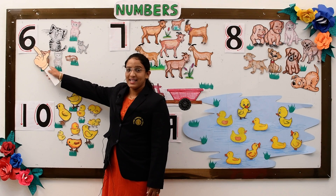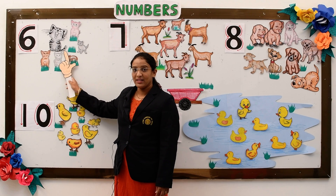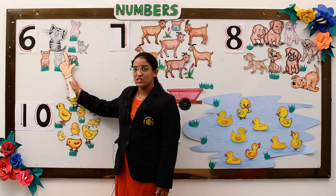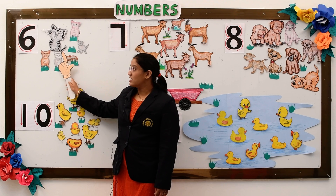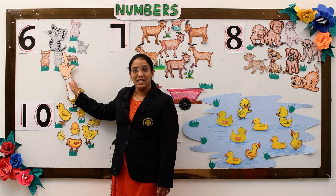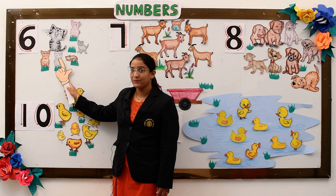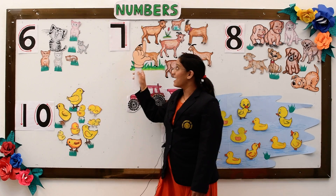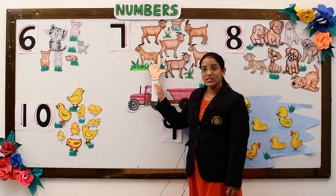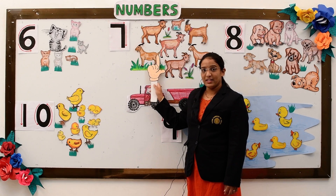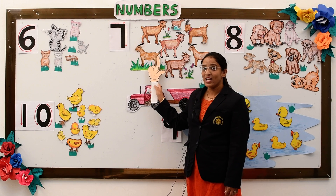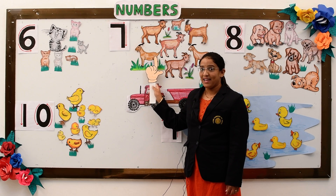Six little kittens think climbing is fun. Little tractor helps them one by one. Seven little goats jump on their feet, as little tractor brings them carrots to eat.